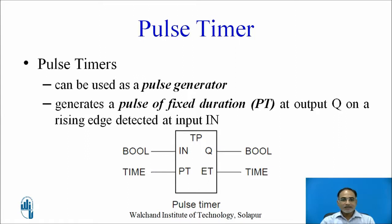Pulse timers can be used as a pulse generator. They generate a pulse of fixed duration, and the duration of that pulse is defined by the preset time PT. You get this pulse at output Q on the rising edge of the input applied. The function block for a typical pulse timer has two inputs — IN and PT — and two outputs — Q and ET.